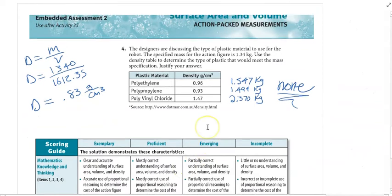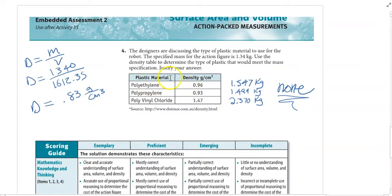On the next page we have some questions that said the specification for the robot design is supposed to be 1.34 kilograms, and then it asks which one of these materials would create that. I did these calculations and none of these would work.